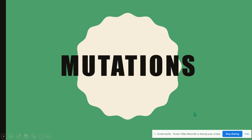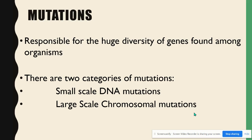In this video, we're going to talk about mutations. One of the things I've noticed is that when we say that word, we tend to think about negative consequences. But in reality, the majority of mutations are neutral, and they're responsible for the huge diversity of genes found among organisms. Human blue eye color, for example, is due to a mutation that occurred 6,000 years ago. When we think about mutations, we basically have two categories: small-scale DNA mutations and large-scale chromosomal mutations.